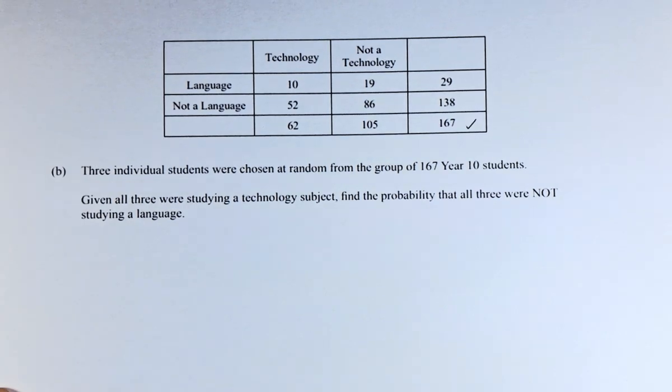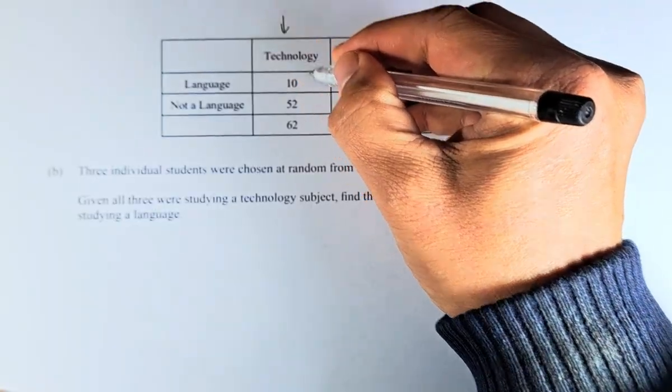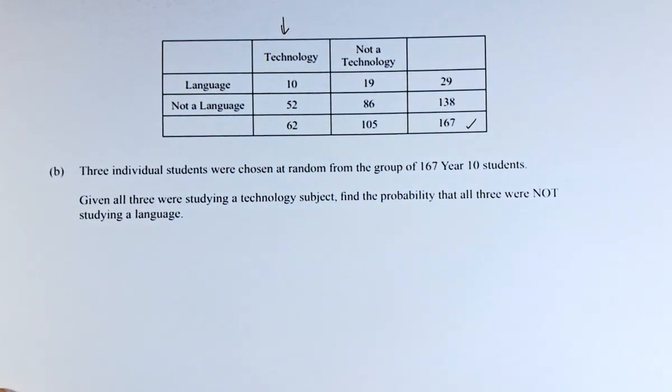To answer that, they were all studying technology, so we are looking at only this column here. All of them are technology. What is the probability that they were not studying a language?